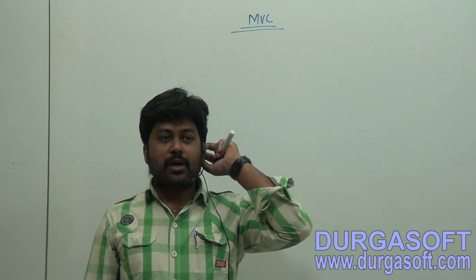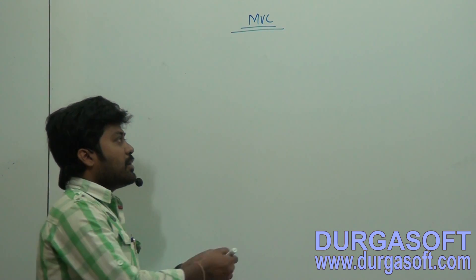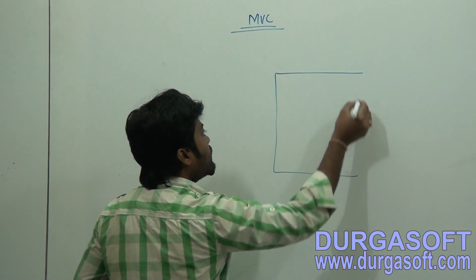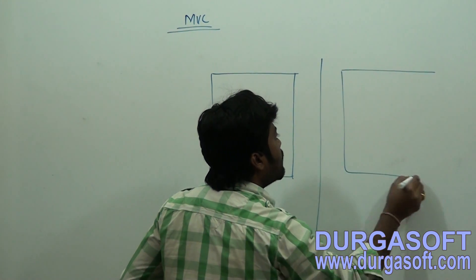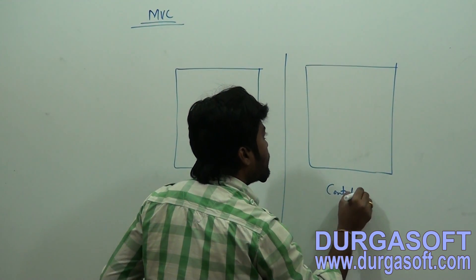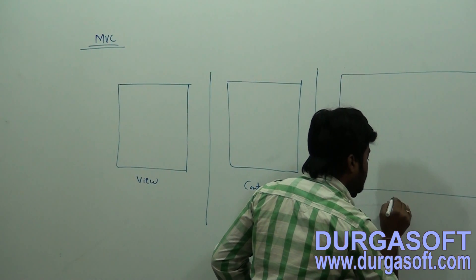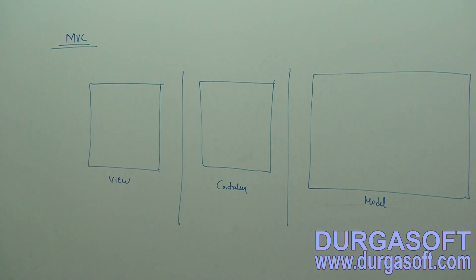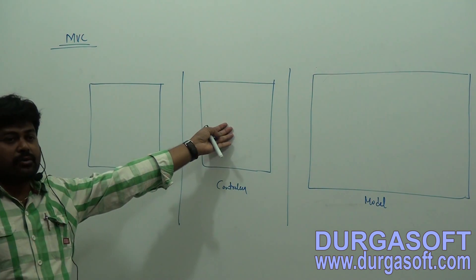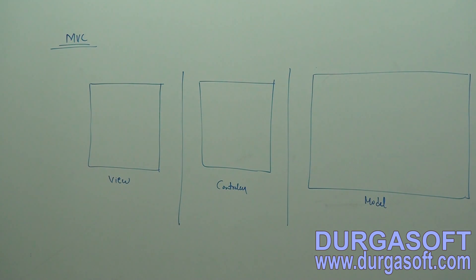So we have two MVCs — MVC and MVC2. What is the difference between both? In MVC, the application is divided into three layers: Presentation, Controller, and Model. This is what the standard MVC architecture looks like — we write presentation-related things, controller operations, and model business operations here.